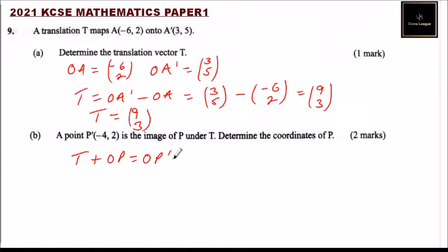So we can take T to the other side and say OP equals OP' minus T. Now, because we have the coordinates of P', OP' is (-4, 2), and minus the transition vector which we found is (9, 3).